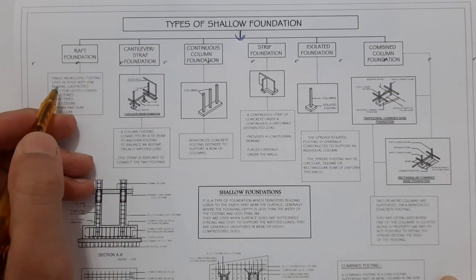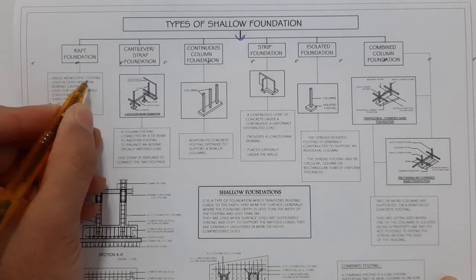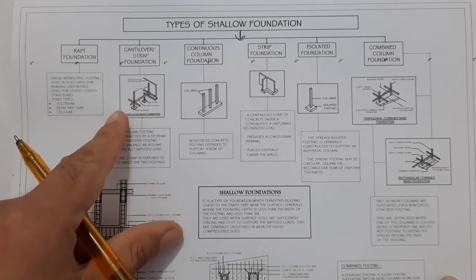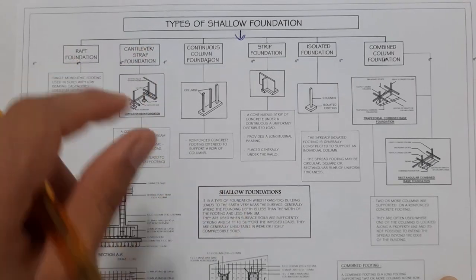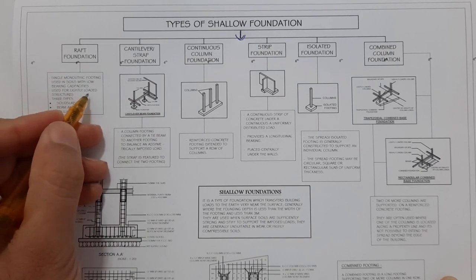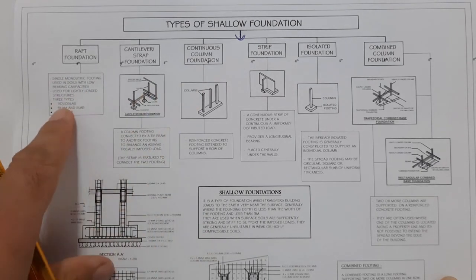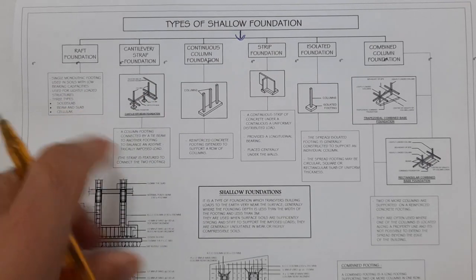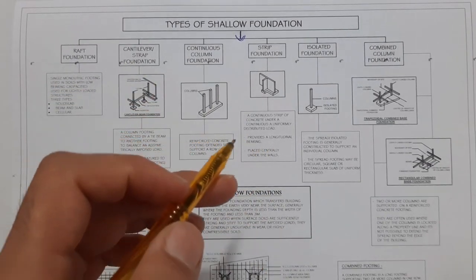The first one is raft foundation. Raft foundation is a single monolithic footing used in soil with low bearing capacities. When the bearing capacity of soil is low, we provide a raft foundation. It is used for lightly loaded structures. There are three types: solid slab, beam and slab, and cellular.